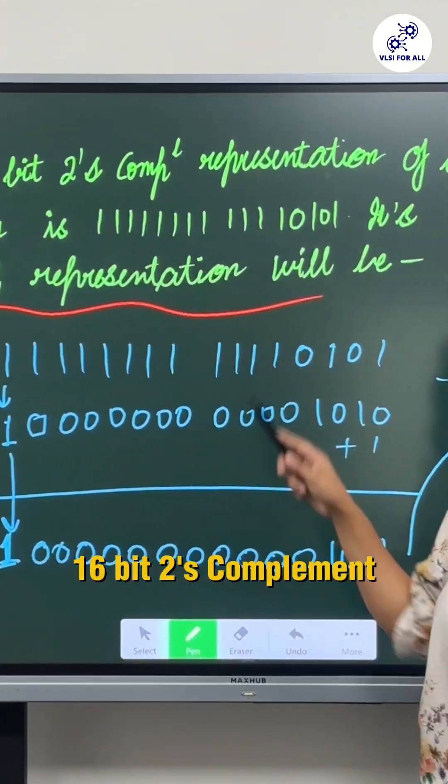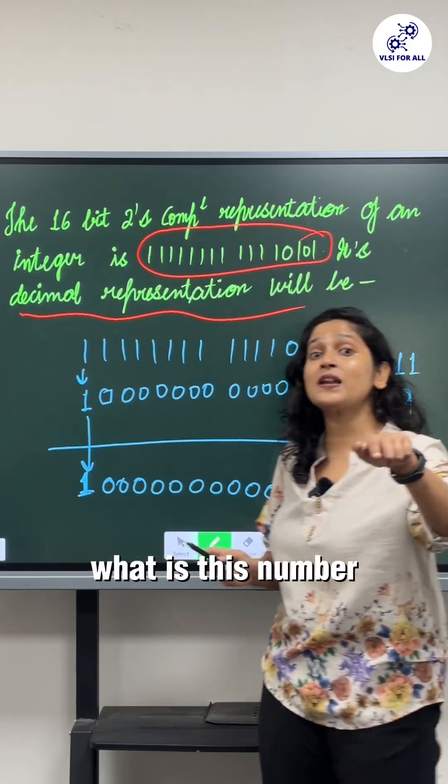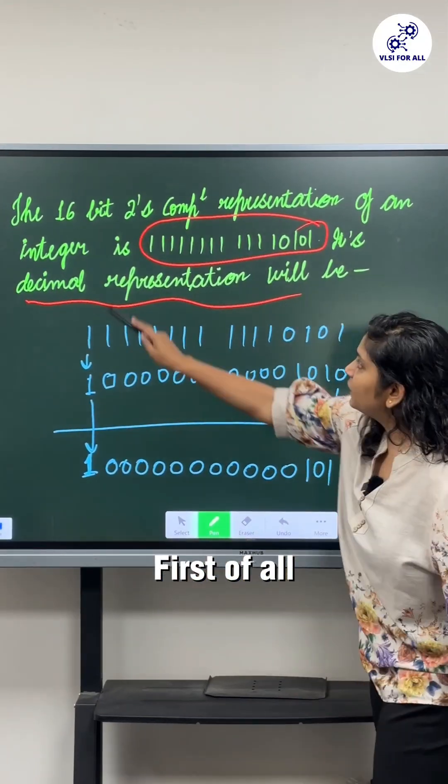Now you have to find out what is this number in decimal representation. So come along with me. First of all, we have written this number as it is, right?